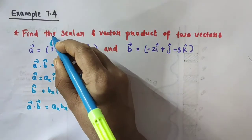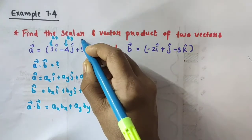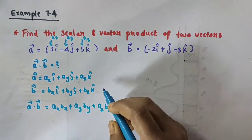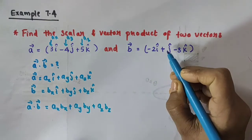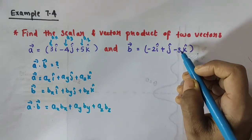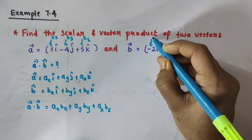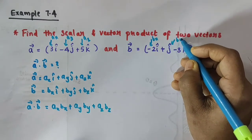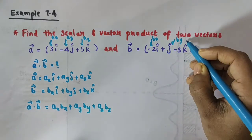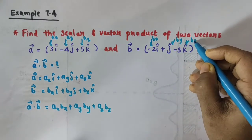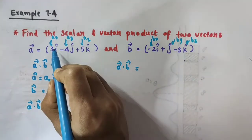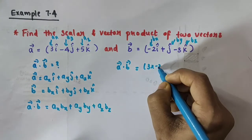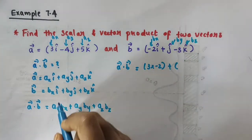Here Ax is 3, Ay is minus 4, and Az is 5. Vector B is in the form Bx·i-cap plus By·j-cap plus Bz·k-cap, where Bx is minus 2, By is 1, and Bz is minus 3. So what will be vector A dot vector B? We compute Ax·Bx, that is 3 times minus 2, plus Ay·By, that is minus 4 times 1.